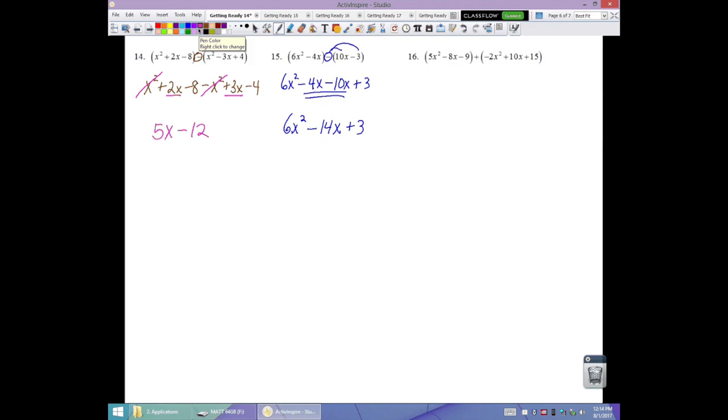And at 16, addition again means ignore the parentheses, combine like terms right away. 5x squared and negative 2x squared is 3x squared. Negative 8x, positive 10x is positive 2x. And negative 9 and positive 15 is positive 6.